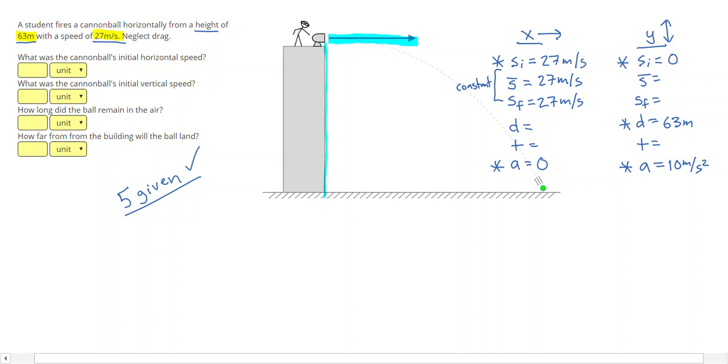So I always start on the side where I have three given, and in that case it is the vertical. So I have three given over here, I see I have distance and acceleration, and I can use the equation t equals the square root of 2d over a to figure out that the time is 3.55 seconds.